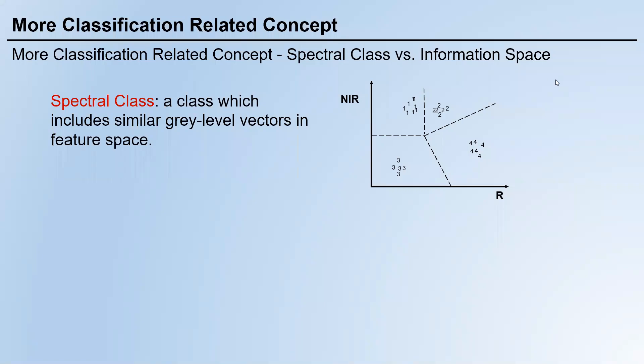Let's continue with image classification. Before introducing specific steps and methods for image classification, I want to introduce several more concepts. The first concept for today is called spectral class — a class which includes similar grayscale vectors in feature space.